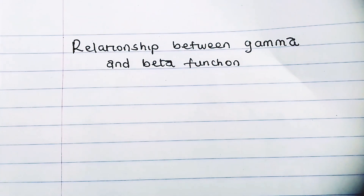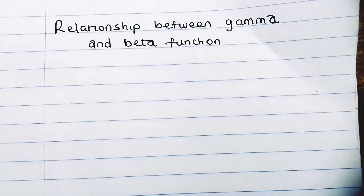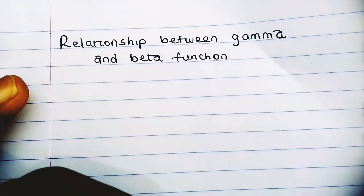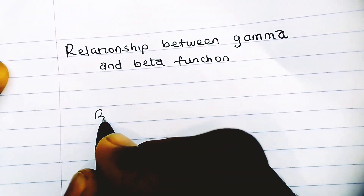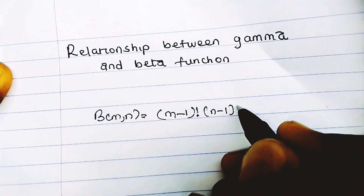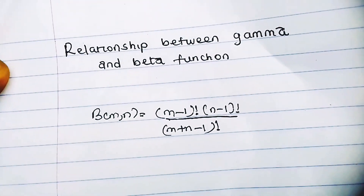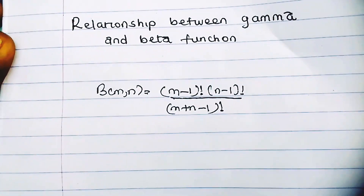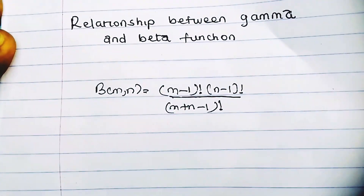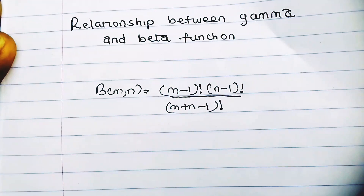We can prove this relationship in two ways. The first way, which is actually the shorter form, is what I'm going to be showing you today. The formula we proved on our last video was that the beta of m and n is equal to m minus 1 factorial times n minus 1 factorial, divided by m plus n minus 1 factorial. Remember, in this beta function, m should not be a fraction — m should only be a whole number or integer.